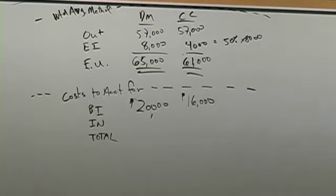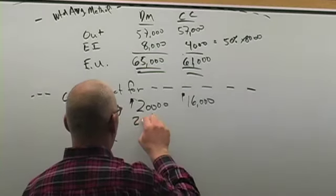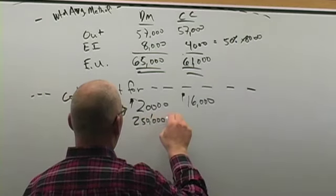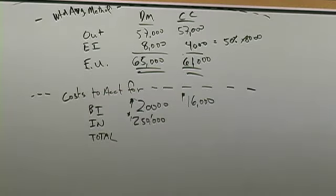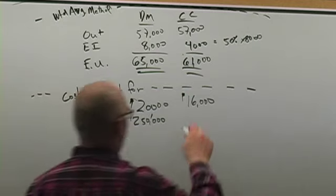In, direct materials. Kristen, $250,000. Perfect. Brett, conversion costs in, $450,000.